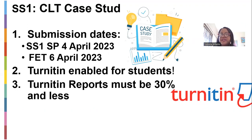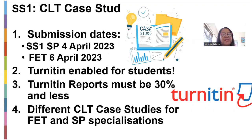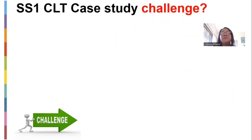Turnitin has been enabled for students, so please be aware of that. Turnitin reports must be 30 percent and less — I had a student whose correlation was about 34 percent, so we can make that 35 percent and less. There are two different case studies: the FET and the SP are definitely not doing the same case study. The questions might be the same but the content of the case study is not.